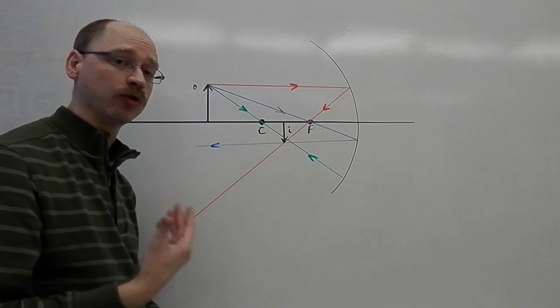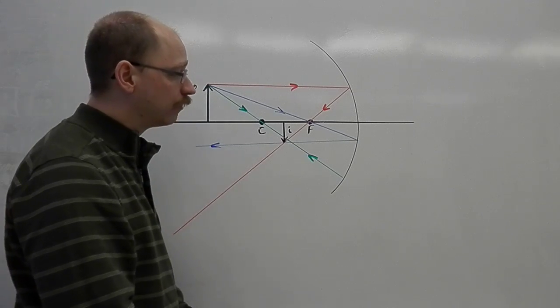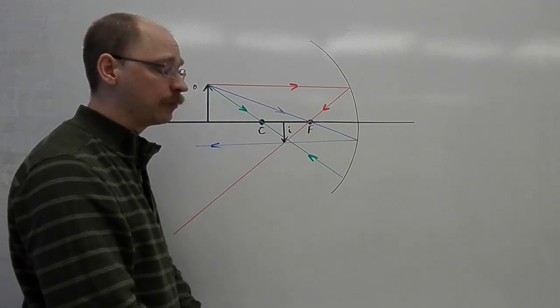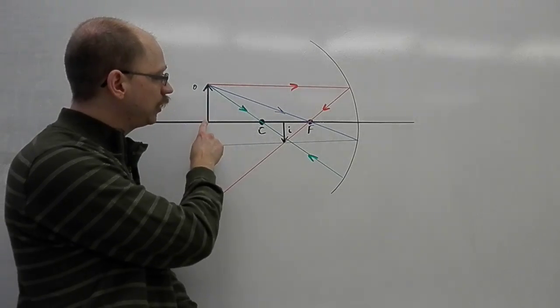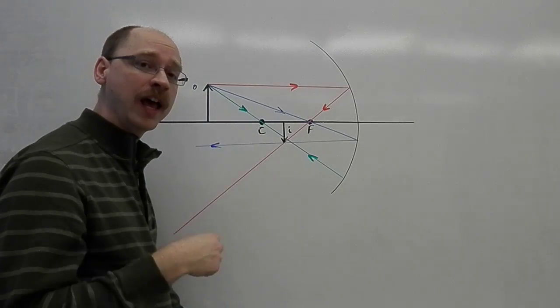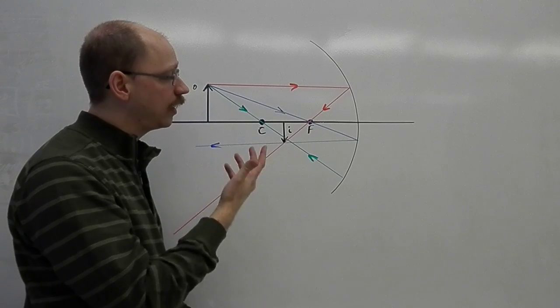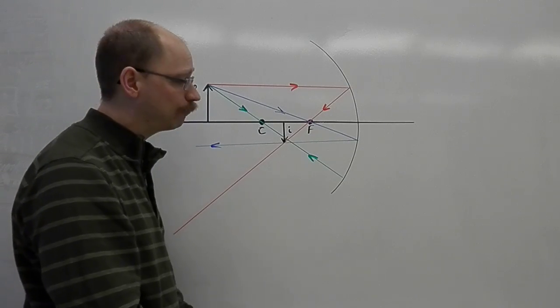What you might want to try doing is drawing more converging concave mirror diagrams like this for yourself, just by placing the object in different positions and seeing what it does to the kind of image that you produce. Okay? Thank you.